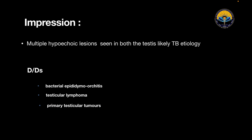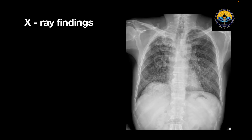As my impression is testicular TB, we did a chest X-ray of the same patient. Here we can see that there are multiple small 2–3 mm nodules seen diffusely spread on both lung fields, suggestive of miliary opacity. There is also a cavitary lesion seen in the right-sided mid-zone with associated pleural thickening and pulling up of the trachea. These findings can be correlated with testicular pathology with primary involvement.